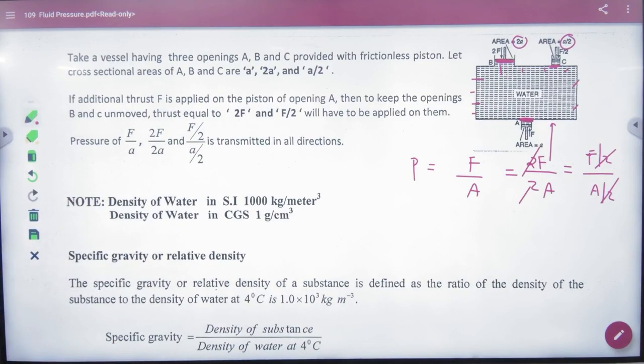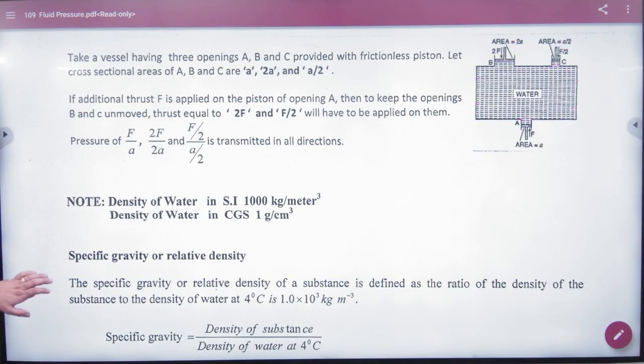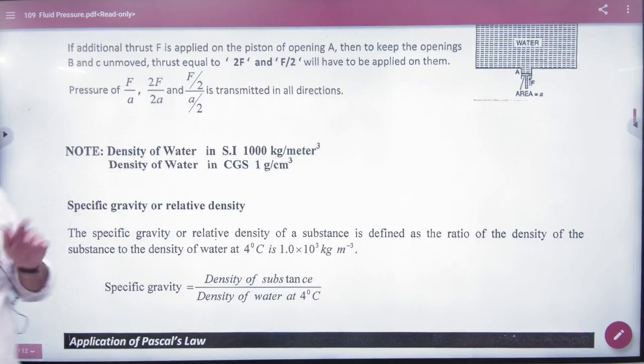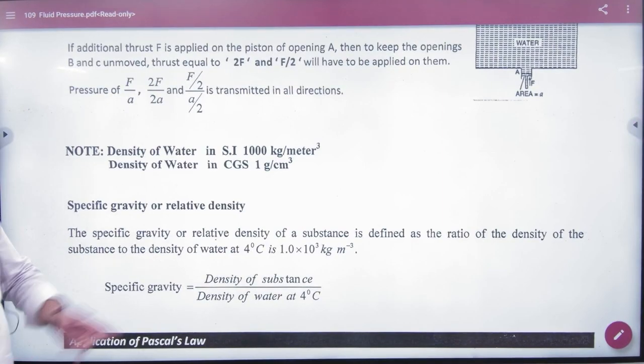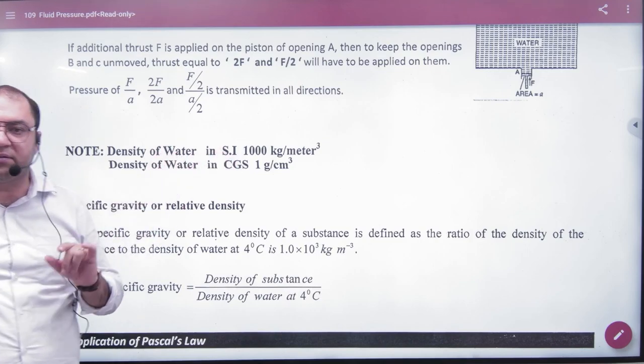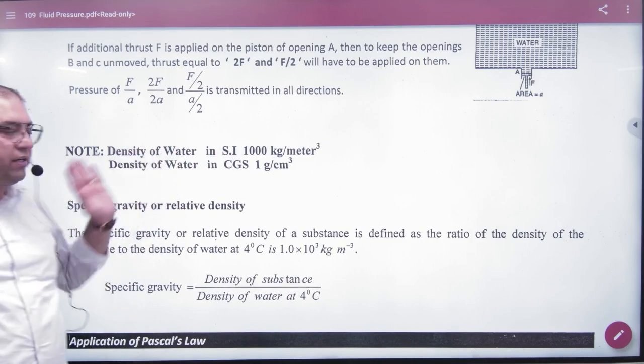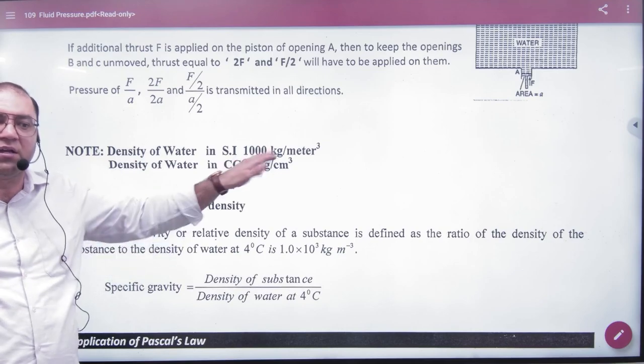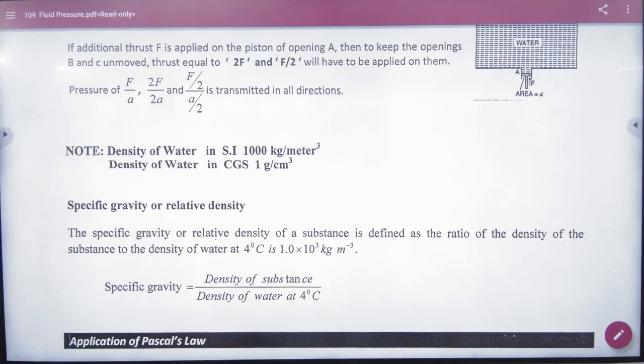For Pascal's Law, note the density of water. The density of water is 1000 kg/m³ in SI units and 1 g/cm³ in CGS units. You have to note it in the formula booklet. Remember the density of water.